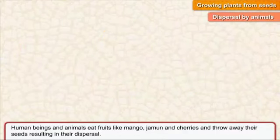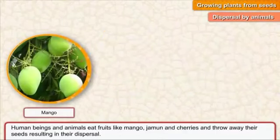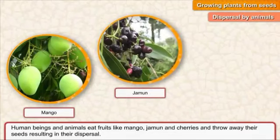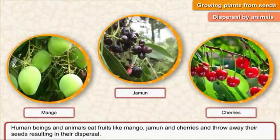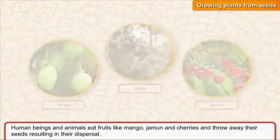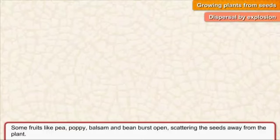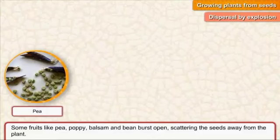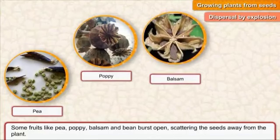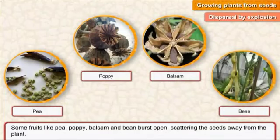Human beings and animals eat fruits like mango, jamun, and cherries and throw away their seeds, resulting in their dispersal. Dispersal by explosion: some fruits like poppy, balsam, and bean burst open, scattering the seeds away from the plant.